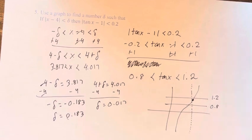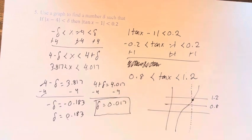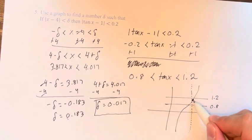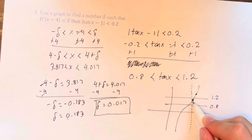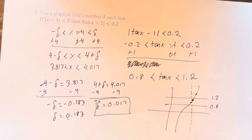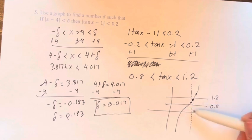So what we have to recognize here is that we have to go with the more restrictive delta value. Because if we go 0.183 in the positive direction, we're going to land way out here, beyond the range, versus if we go 0.017 in the other direction, then we're going to land not outside of the range because it's the more restrictive value. So our answer is 0.017.